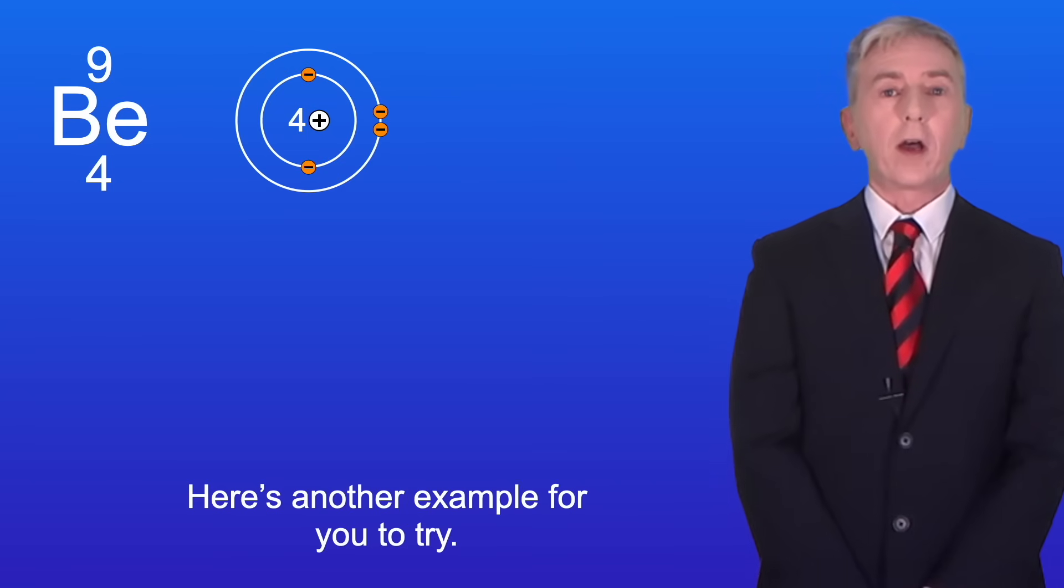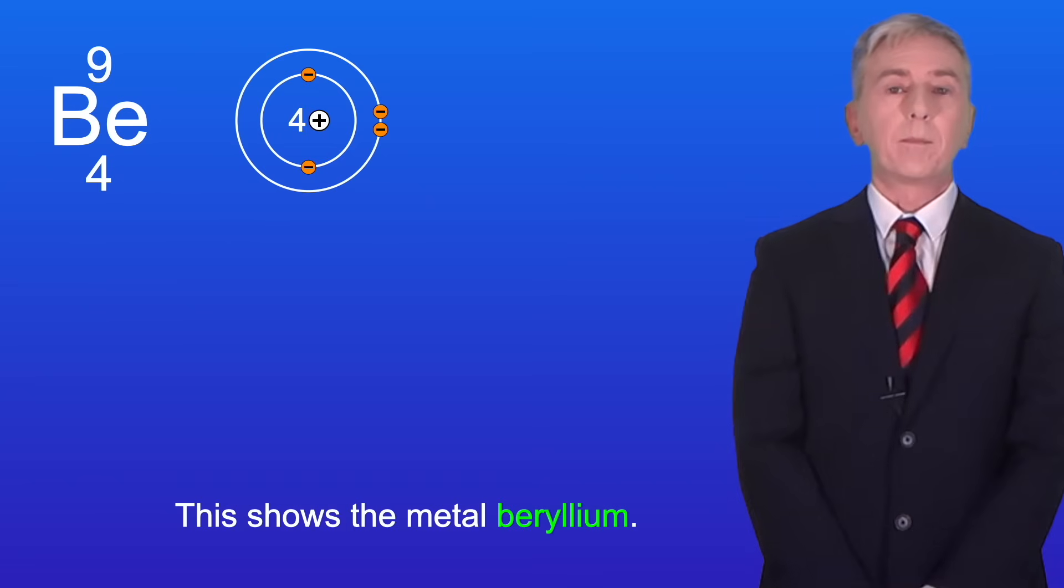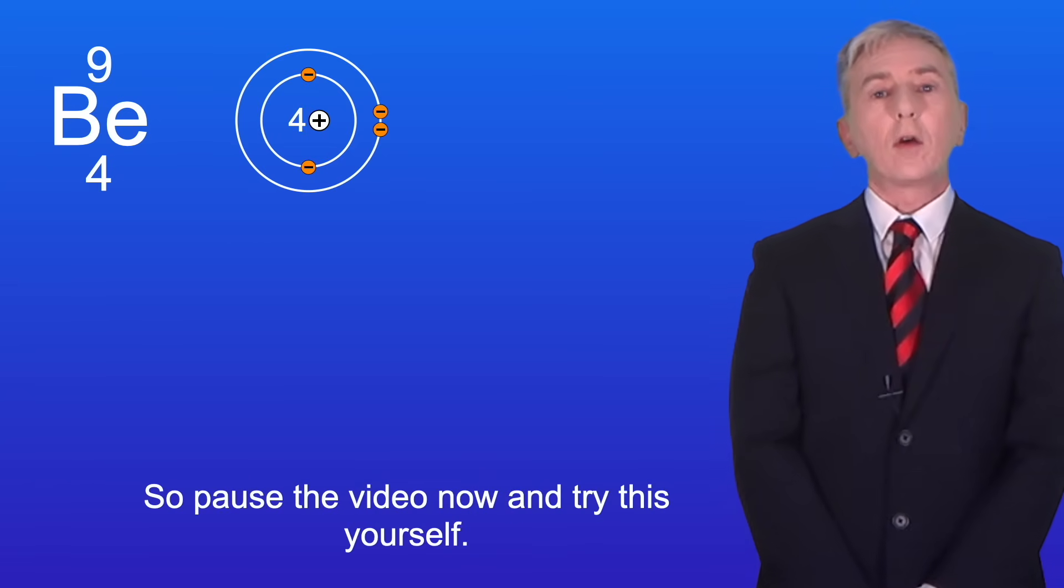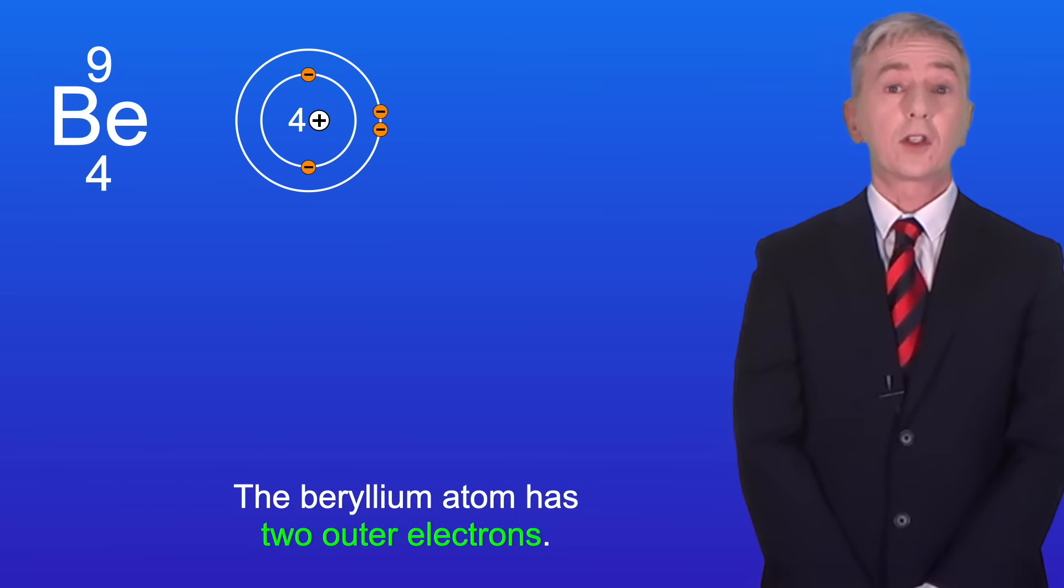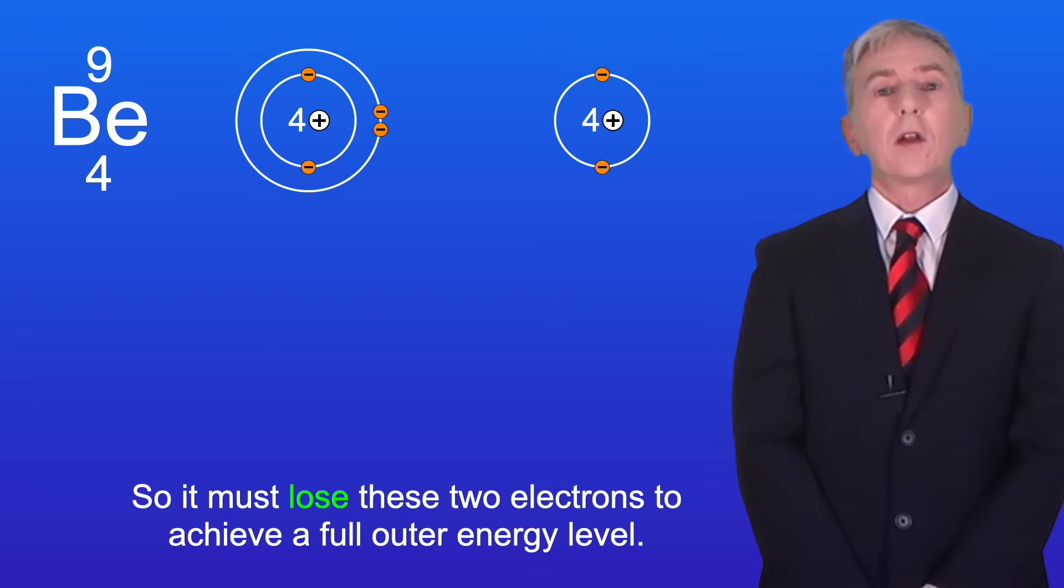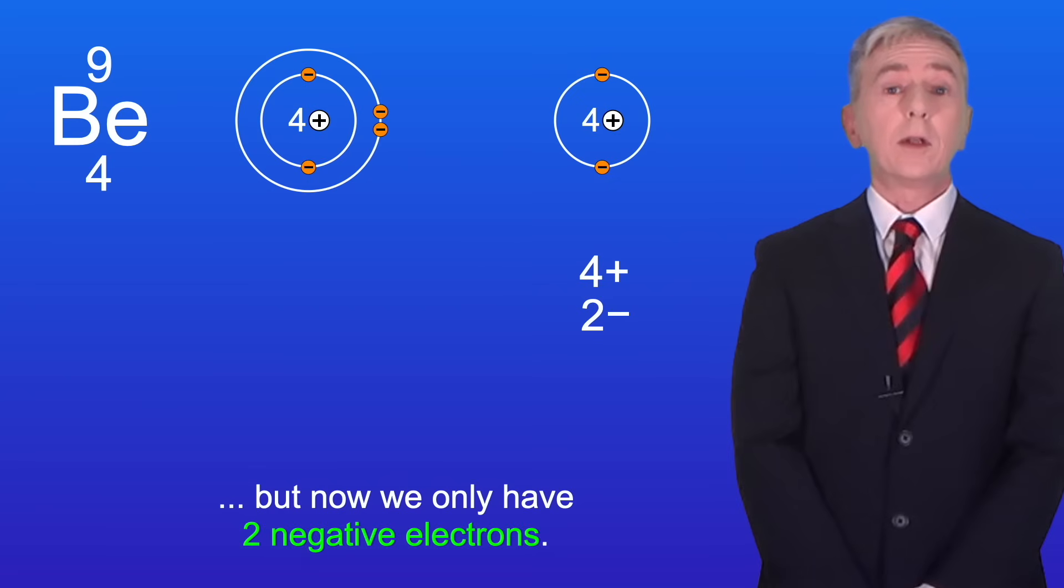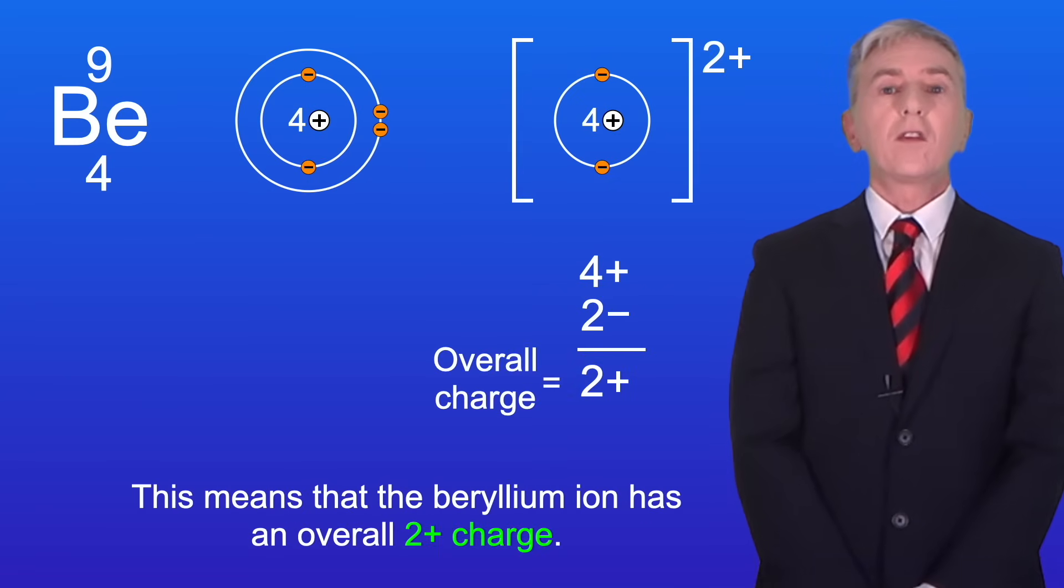Here's another example for you to try. This shows the metal beryllium. I'd like you to draw the structure of the beryllium ion, so pause the video now and try this yourself. Okay, the beryllium atom has 2 outer electrons, so it must lose these 2 electrons to achieve a full outer energy level. In the nucleus we have 4 positive protons, but now we only have 2 negative electrons. This means that the beryllium ion has an overall 2 positive charge.